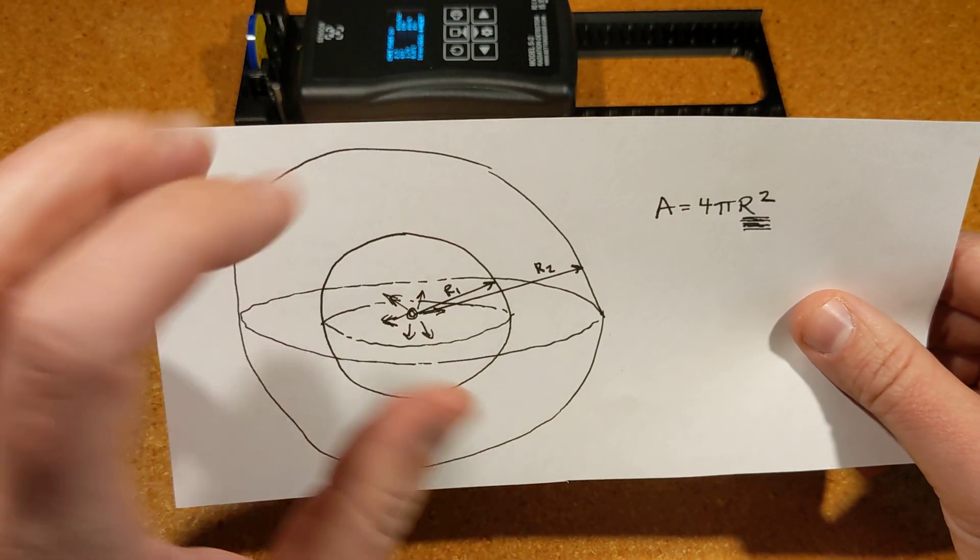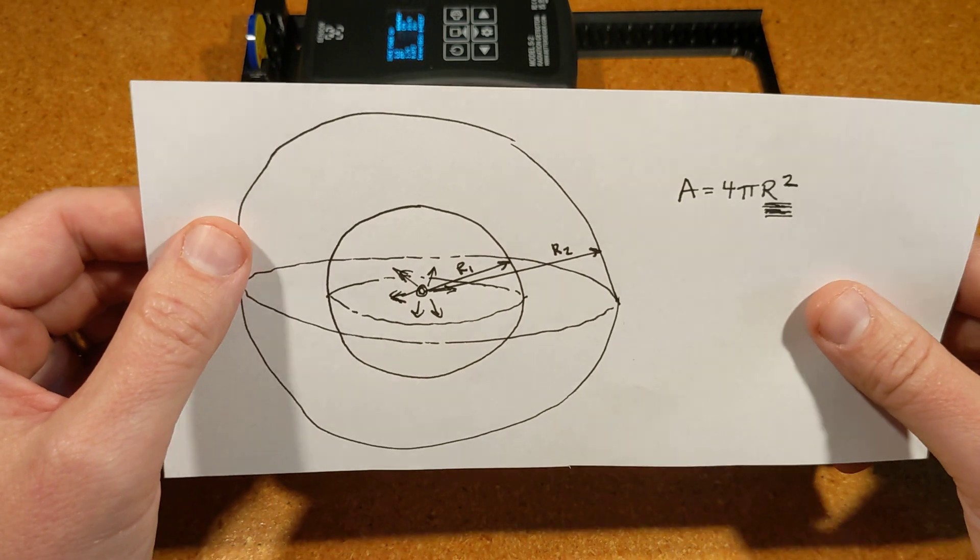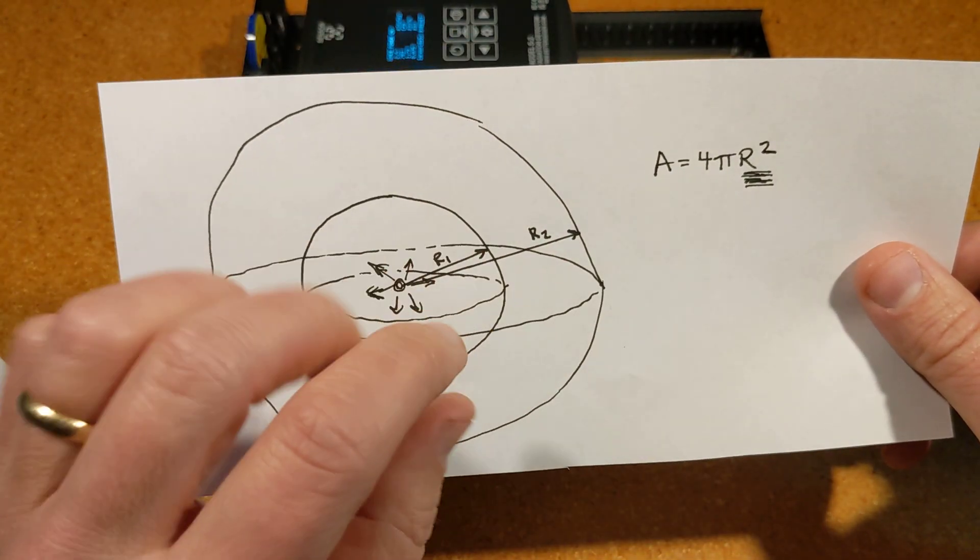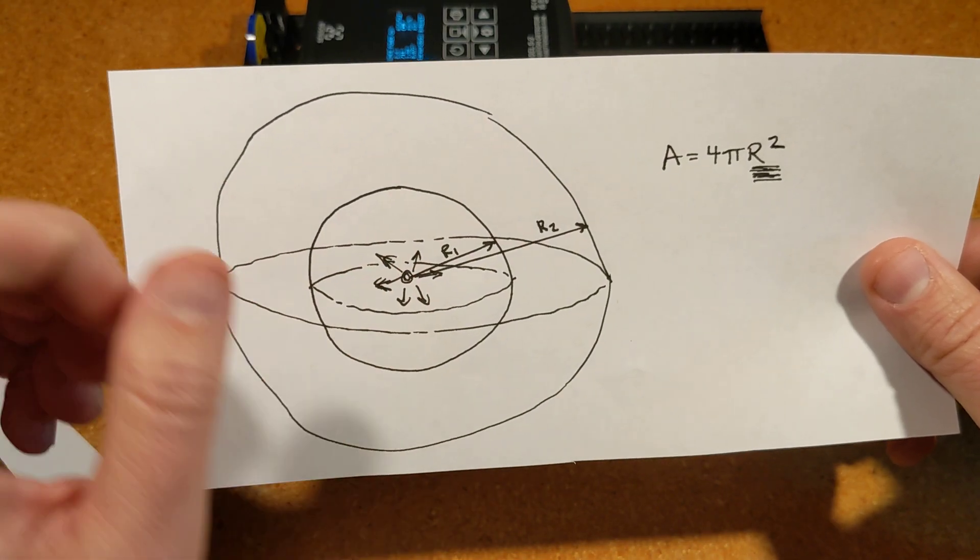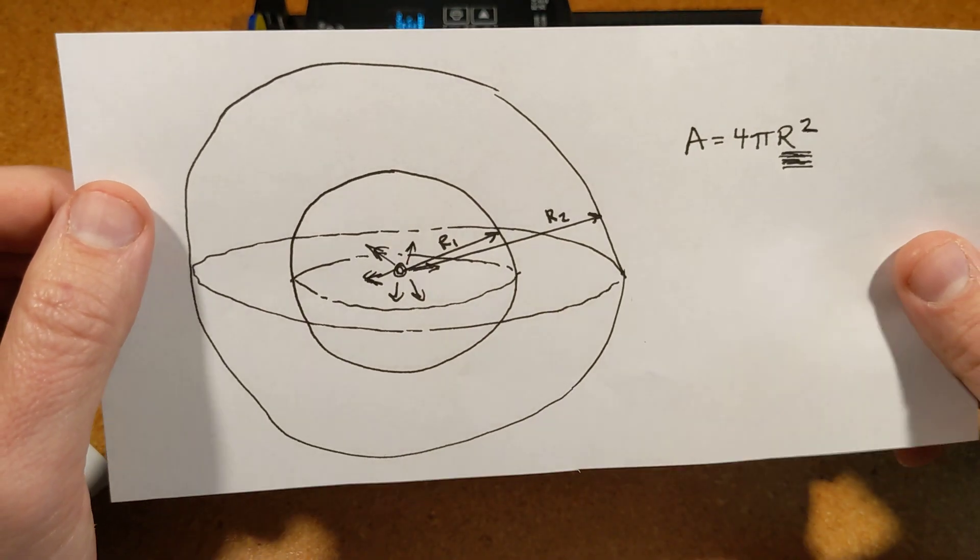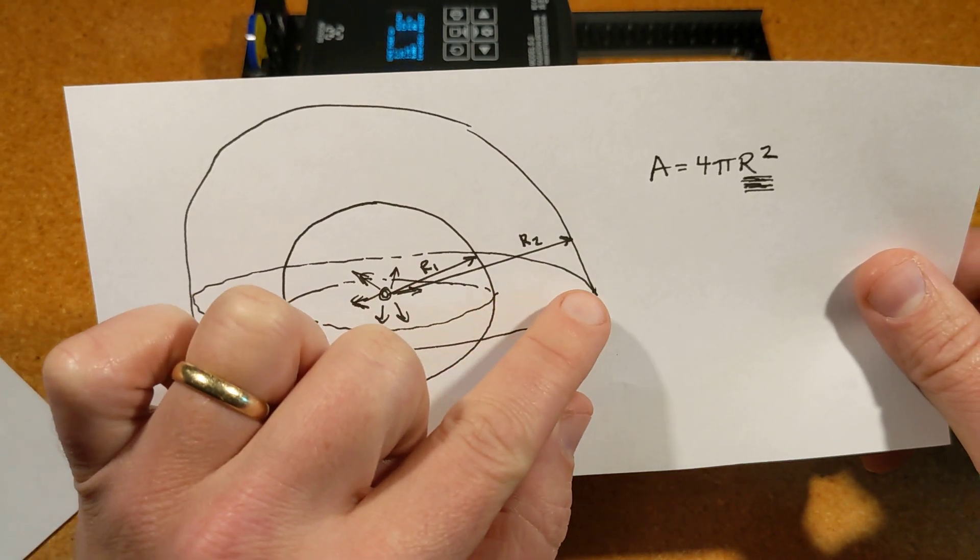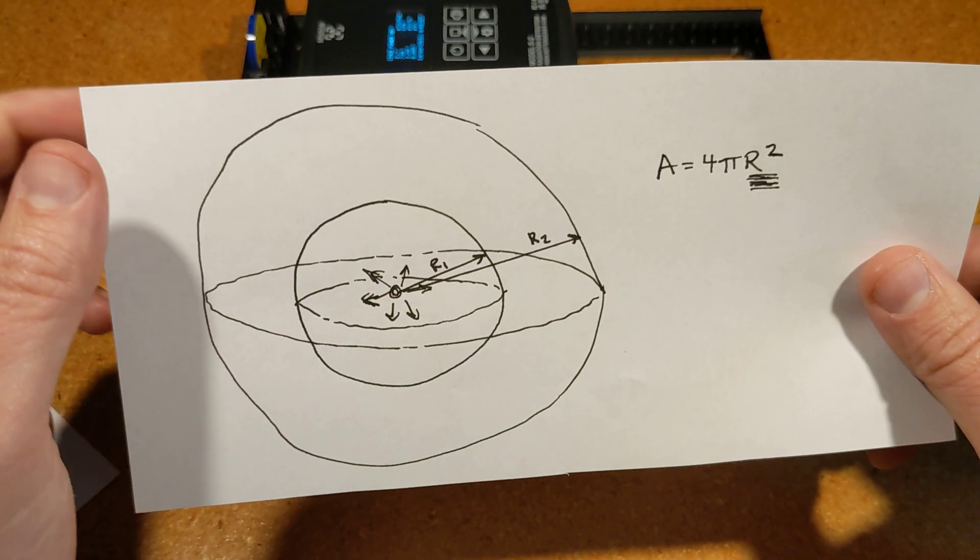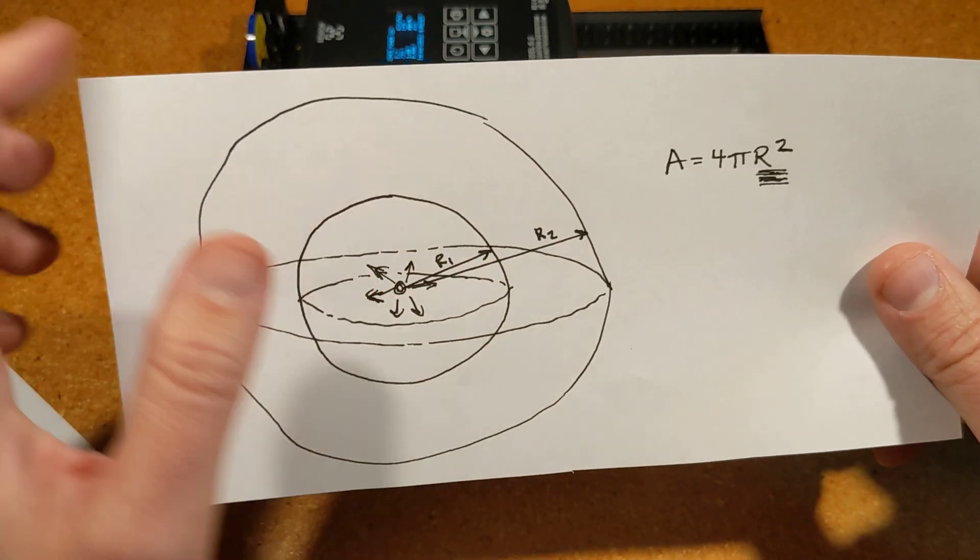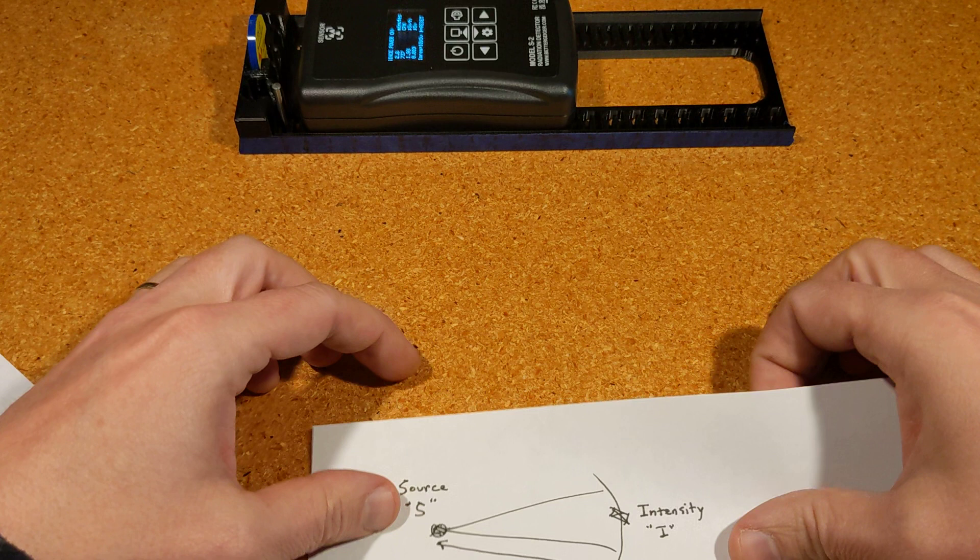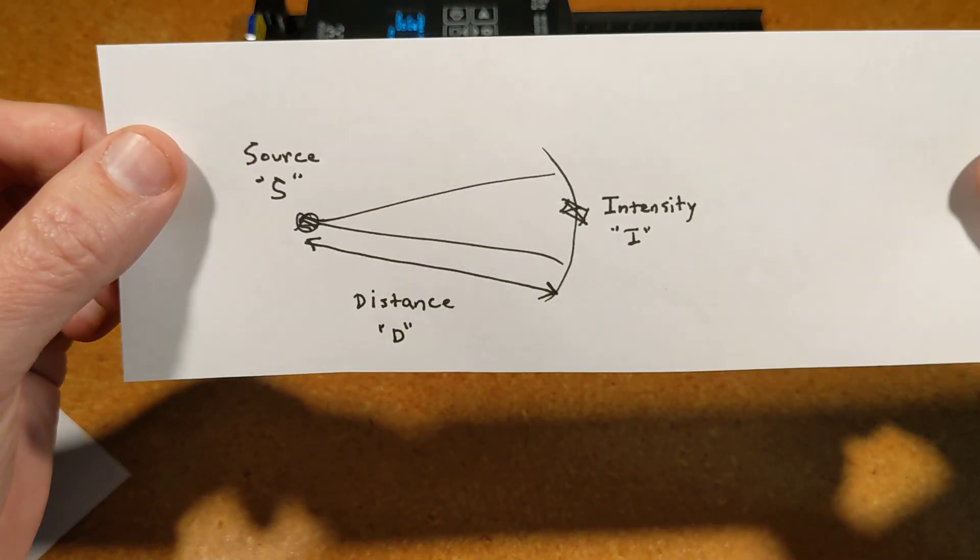As you move further away, that sphere gets bigger and the radiation emitted is spread over a much larger area. This is the very basic image of what that source is doing and how the radiation is spreading. As you can imagine, when you go a little bit further away, that area gets bigger a lot faster than the distance. That's where we step into the math of it a little bit.